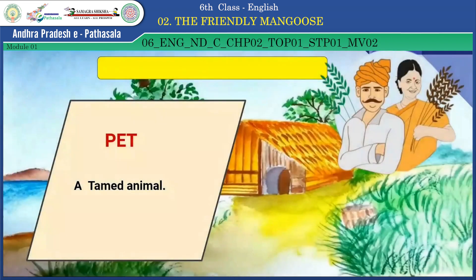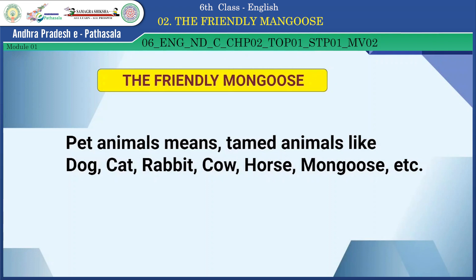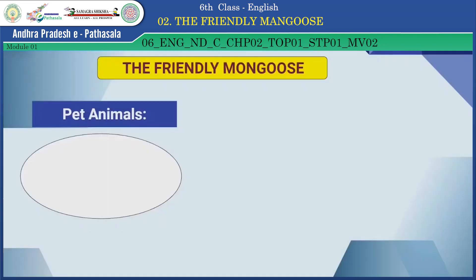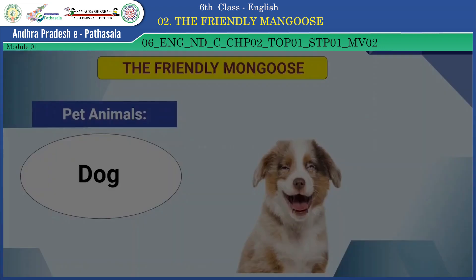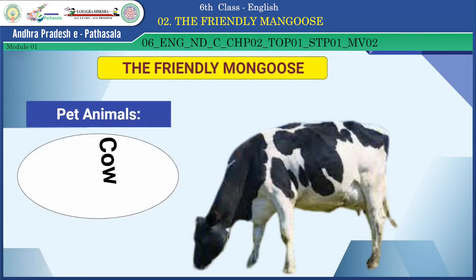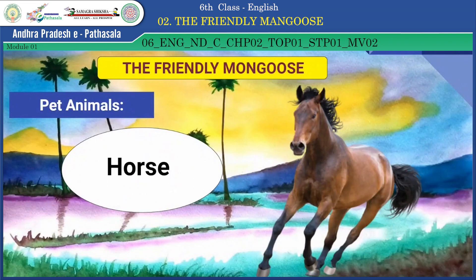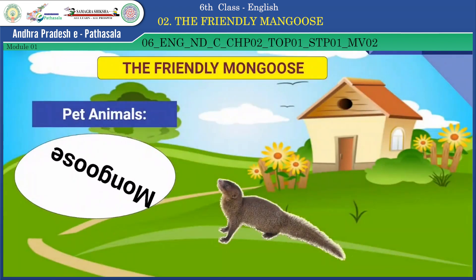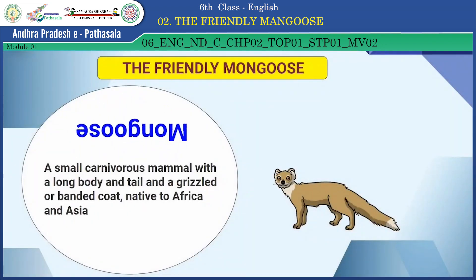Pet means a tamed animal. Pet animals include tamed animals like dog, cat, rabbit, cow, horse, mongoose, etc. Look at these animals — all these are pet animals: dog, cat, rabbit, cow, horse, mongoose. Mongoose means a small carnivorous mammal with a long body and tail and a grizzled or banded coat, native to Africa and Asia.